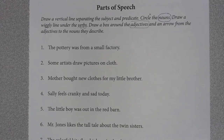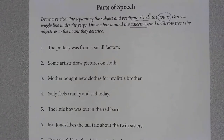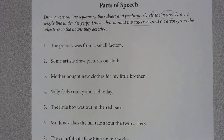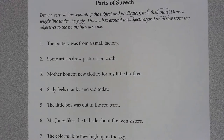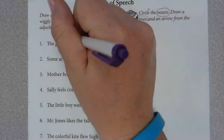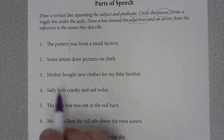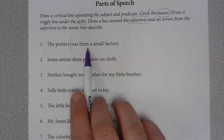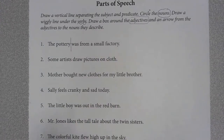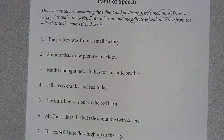Number one says: the pottery was from a small factory. What is the subject of this sentence? The pottery. So I'm going to draw a vertical line, which goes up and down, right there. I'm separating the subject of the sentence — which is 'the pottery' — from the predicate, which is 'was from a small factory.' Now, does that mean that only verbs are going to be on this side? No. I'm simply separating the subject from the predicate; it can help me diagram the sentence a little better.